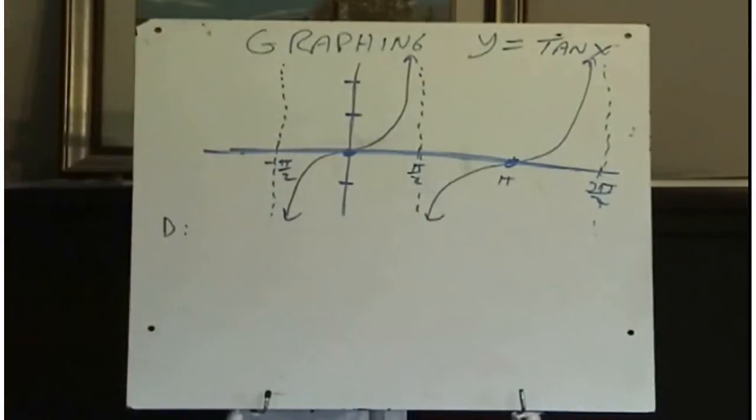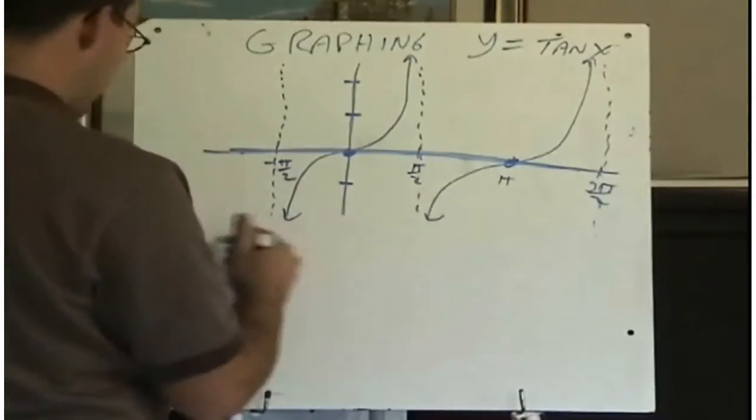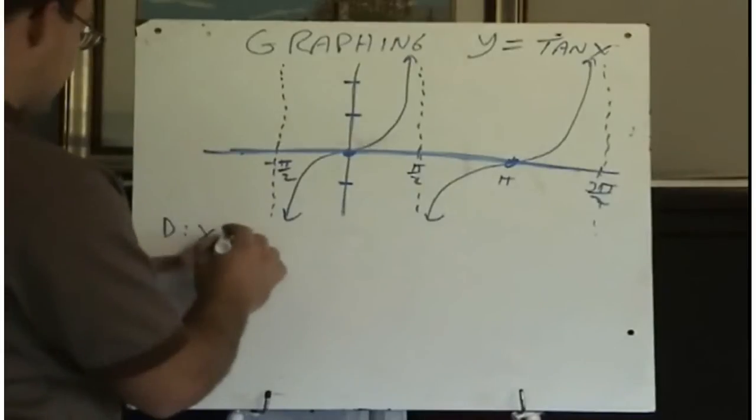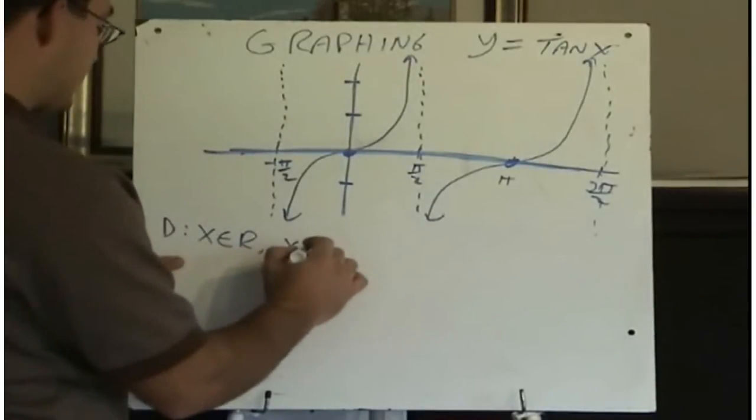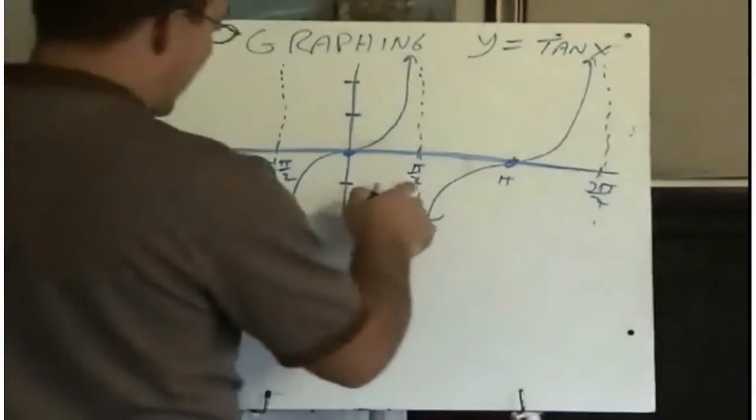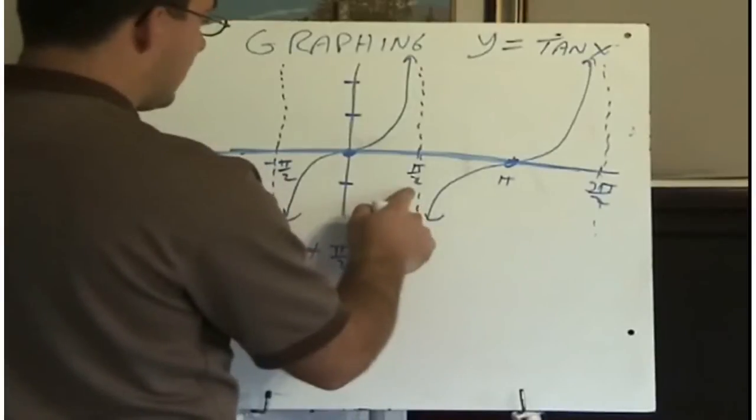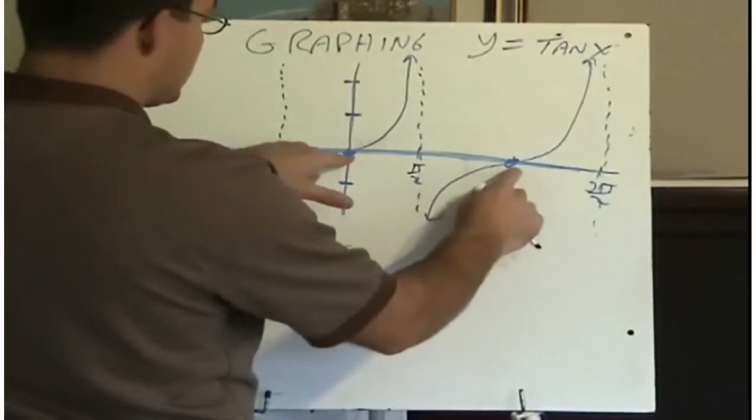The domain is not all real numbers, because we have places where there are asymptotes. And so the easiest way to describe the domain of tan function is to say that x is everything, x is all real numbers, except x is not pi over 2, it's not this, plus any multiples of pi.